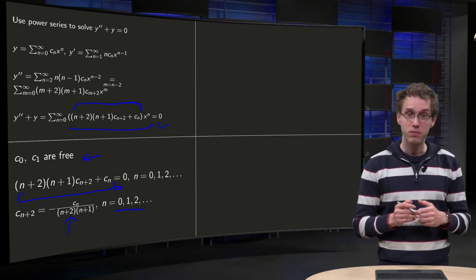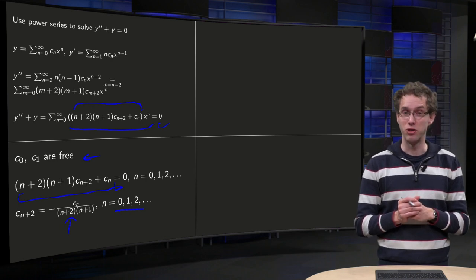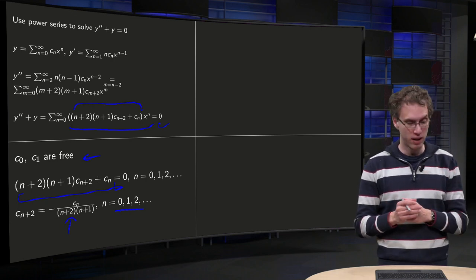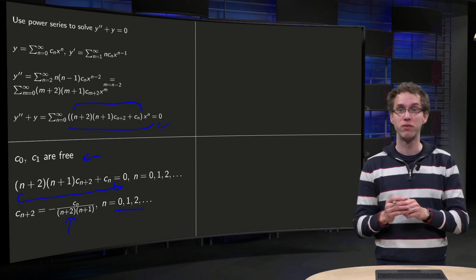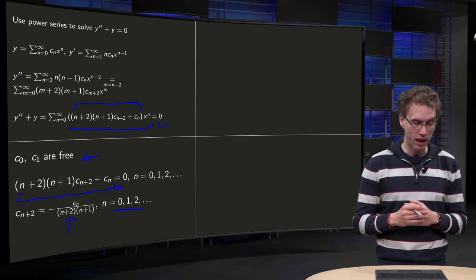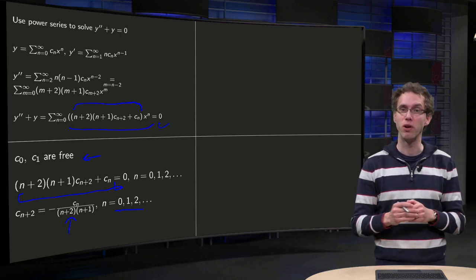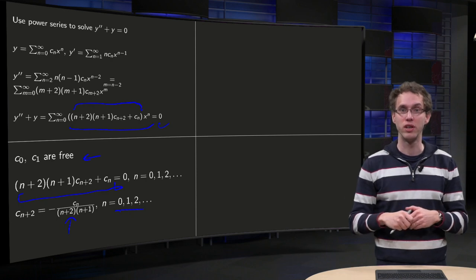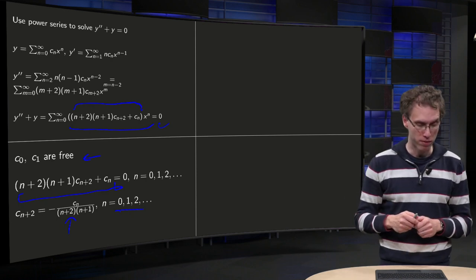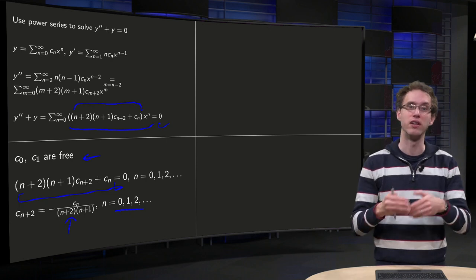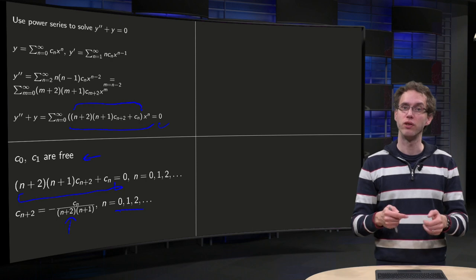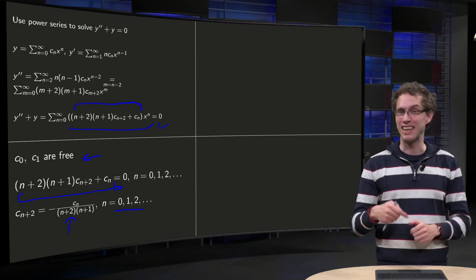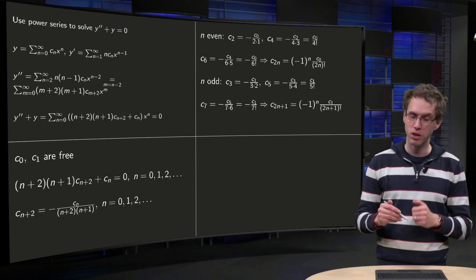Now we observe: if we plug in n equals 0, c₂ is given in terms of c₀. Then if we plug in n equals 2, c₄ is given in terms of c₂, and if we plug in n equals 4, we get c₆ given in terms of c₄. So all even cₙ's are given in terms of each other. Something similar happens with c₁: plugging in n equals 1 gives c₃ in terms of c₁, then c₅ in terms of c₃, etc. So we can look at the even coefficients and the odd coefficients separately, because they do not interact with each other.